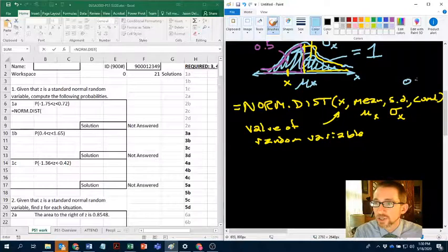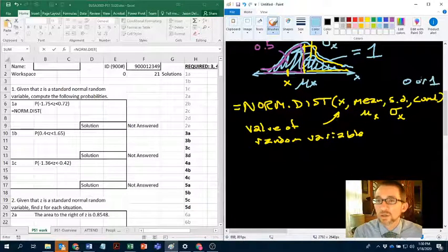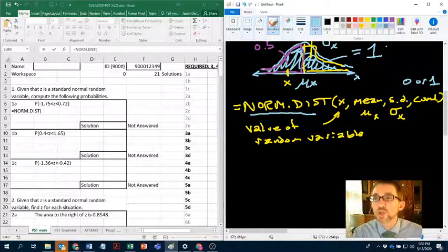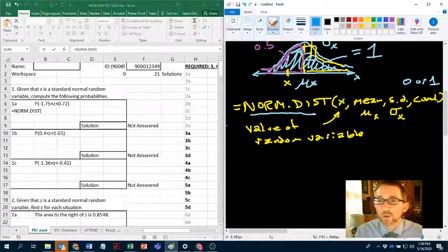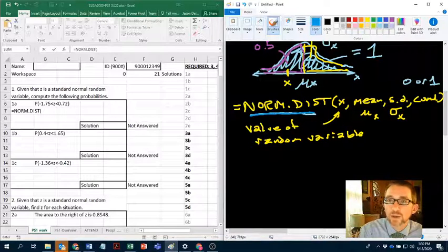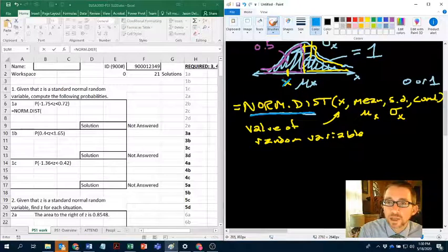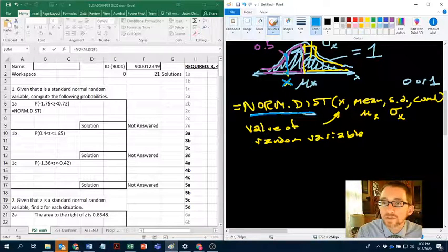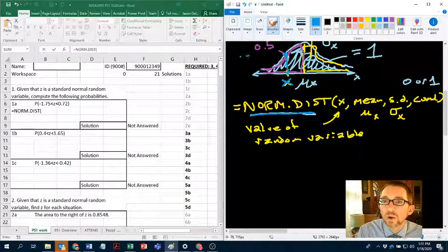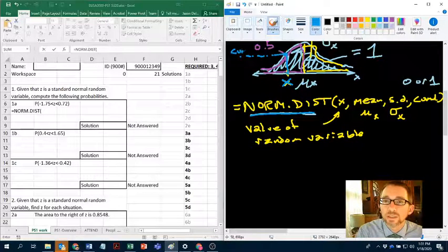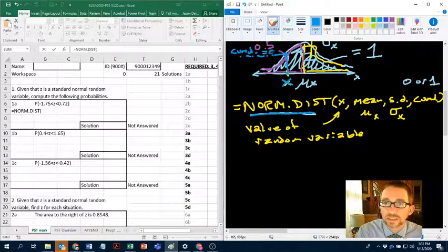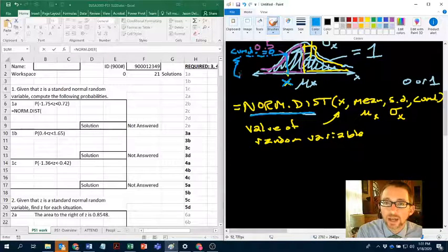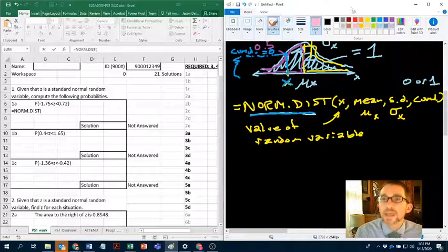And then you have to either say cumulative is zero or one. That can take either zero or one. The reason is that the NORM.DIST formula actually does two things, it's two formulas kind of embedded in one. So let's say that you have a given value of x. There are two numbers that Excel will give you for a given normal distribution. One is the height of the curve.